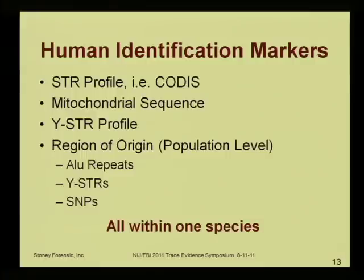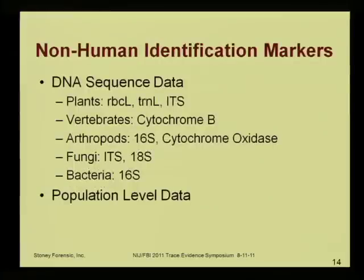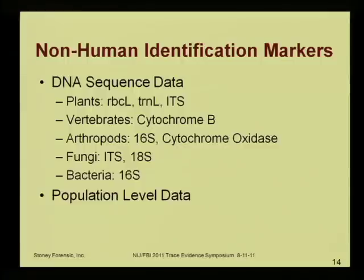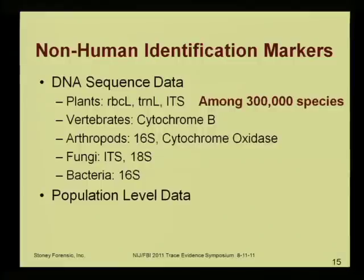The non-human identification markers — depending on whether you're interested in plants, fungi, vertebrates, or arthropods — there are different markers available. These are chosen primarily by those doing molecular systematics, the taxonomic work classifying various species. So when using a technique to exploit that existing data bank, we're restricted to those markers for which data already exists. For plants, which are the focus of my talk, we're talking about 300,000 different estimated species, as opposed to one species. So it's a fundamentally different thing we're doing than looking at human variation in one species.